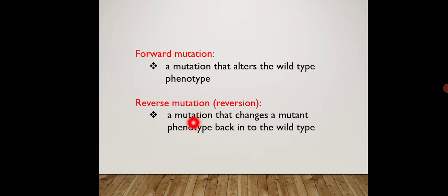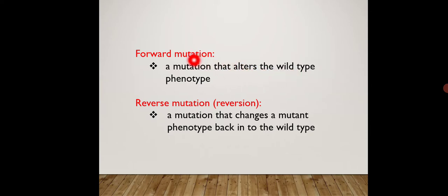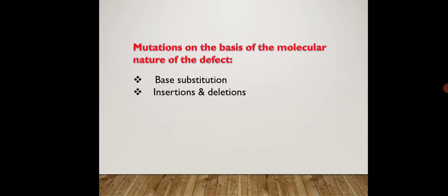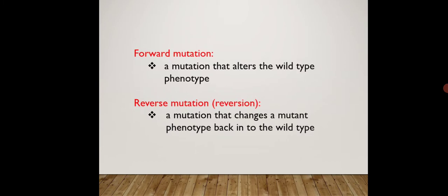Opposite of forward mutation is reversion or reverse mutation — the chapter is also named 'mutation and reversion.' Reverse mutation is a mutation that alters the mutant phenotype back into the wild type. In reverse mutation, the mutant type is converted back into the normal type. In forward mutation, the wild type sequence is changed to a mutant type, while in reverse mutation the mutant type is converted back into the wild type.